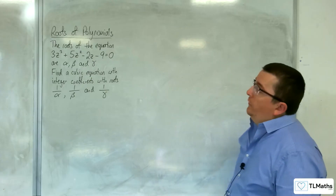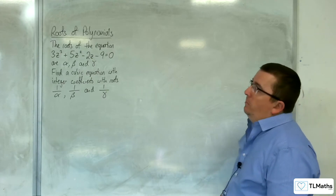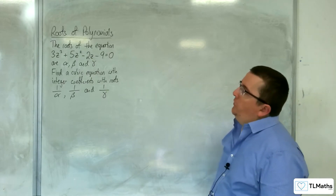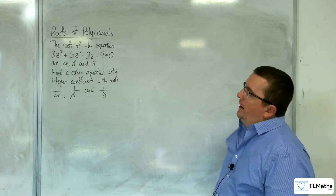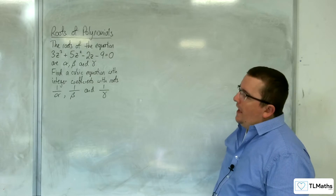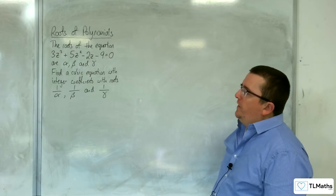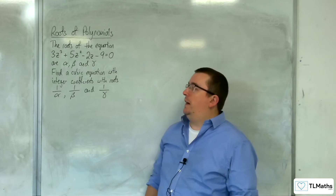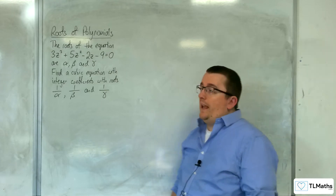In this video, the roots of the equation 3z cubed plus 5z squared take away 2z take away 9 equals 0 are alpha, beta, and gamma. Find a cubic equation with integer coefficients with roots 1 over alpha, 1 over beta, and 1 over gamma.